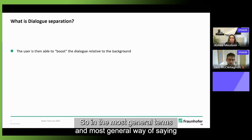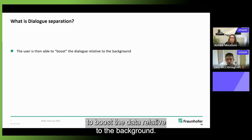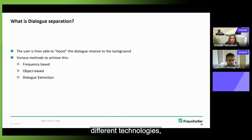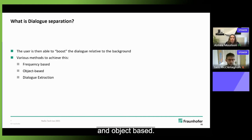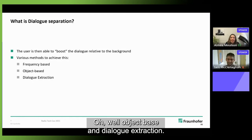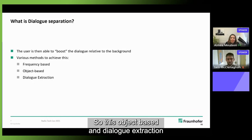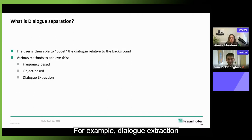So let's start. What is dialogue separation? In the most general terms, it gives the user the ability to boost the dialogue relative to the background. This could be achieved in many different ways with many different technologies. There are kind of various methods: frequency based, where technology hones in on typical frequency bands speech can be associated with, and object based dialogue extraction.